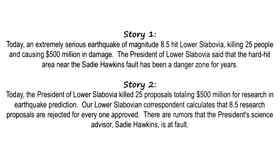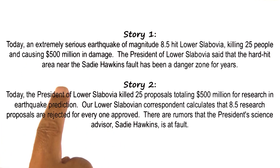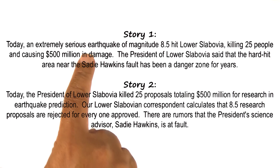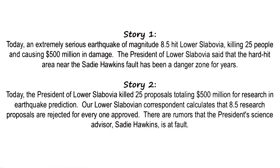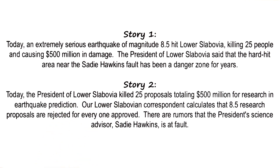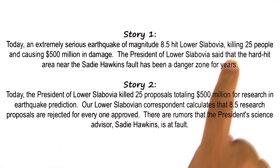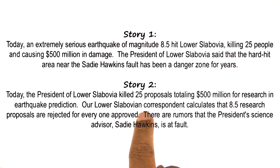We'll use story understanding to examine the general processes of understanding. Here are two stories that we have encountered earlier. The first story is talking about an earthquake that hit Lower Slobavia and caused some damage. The second story is talking about the president of Lower Slobavia, who killed a certain number of proposals. Both of them deal with killing, but the meaning of the two stories are very, very different.